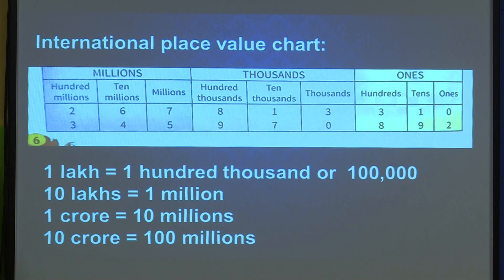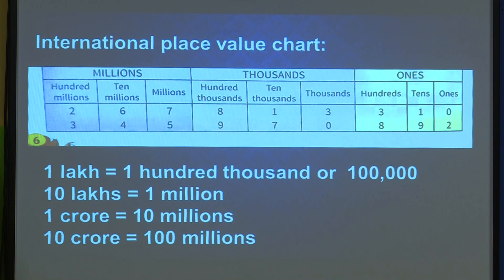What is the difference between the Indian and international system? In the Indian system, for any 6 to 7 digit number, after 3 digits from the right you insert a comma, then after 2 digits, then after 2 more digits.